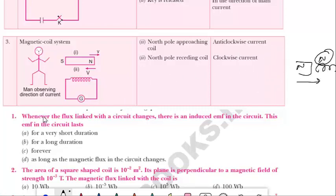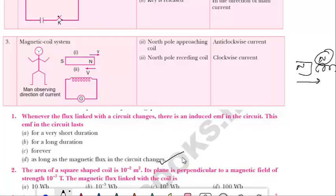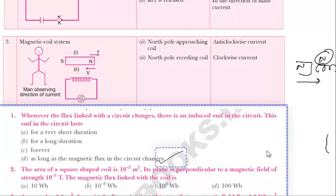Now we are doing some MCQs based on these concepts. First one: whenever the flux linked with the circuit changes, there is an induced EMF. This EMF lasts — the answer is D — as long as the magnetic flux linked with the circuit changes.